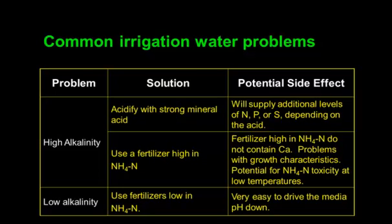Here are common irrigation water problems and what to do about them. For high alkalinity, use a strong mineral acid to reduce alkalinity — this will also supply nutrients: nitrogen, phosphorus, or sulfur depending on the acid. You can also use fertilizers high in ammoniacal nitrogen to neutralize acidity. However, those fertilizers don't contain calcium, which can cause problems with growth characteristics and potential ammonium toxicity at low temperatures and saturated conditions.